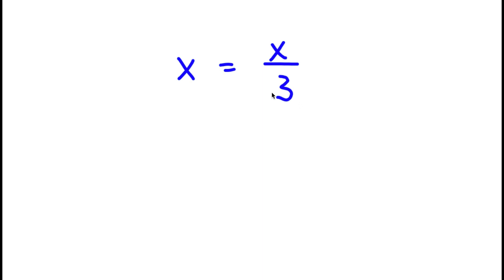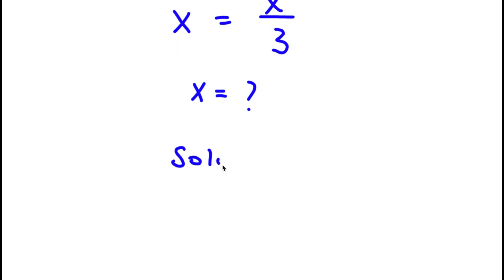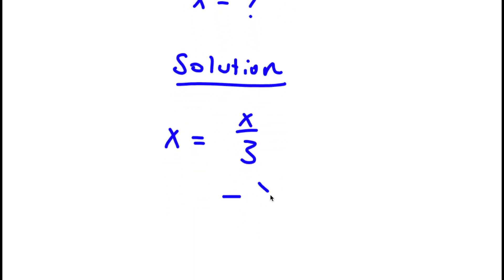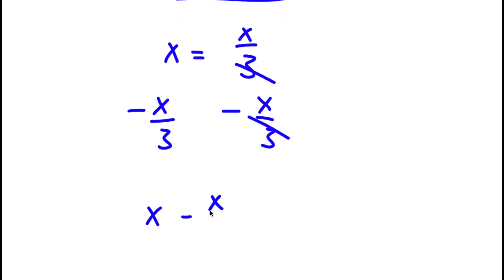So in this problem, I have x is equal to x divided by 3, and I'm going to find the value of x. For my solution, I first start with x is equal to x over 3. Now I'm going to subtract x over 3 on both sides, so I'll be left with x minus x over 3 is equal to 0.